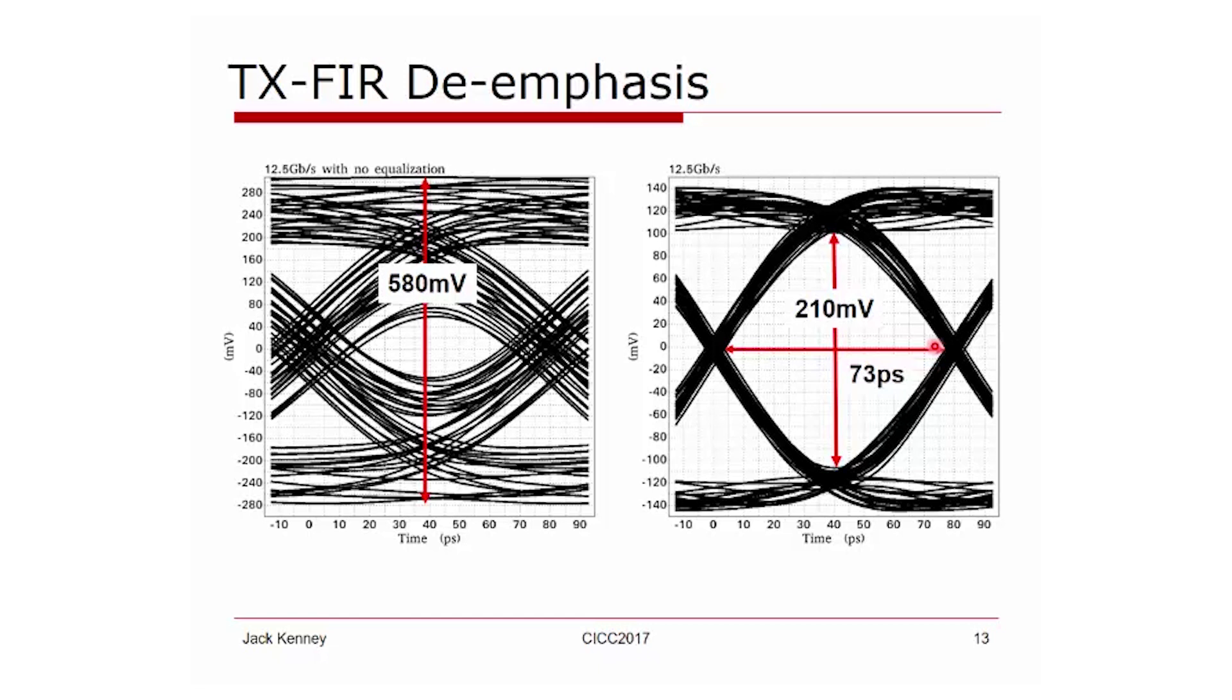That's 73 picoseconds out of 80. But you can also see that now the peak-to-peak voltage is about 280 millivolts. So we have attenuated the signal to something smaller going into the limiting amp.